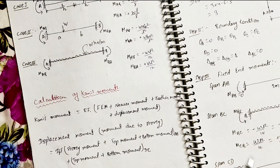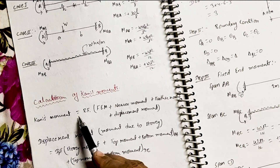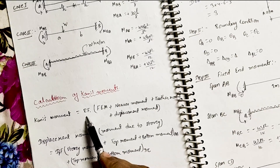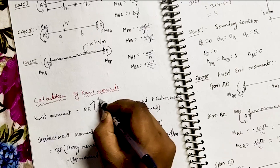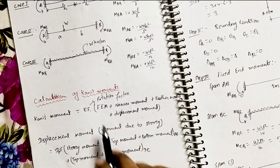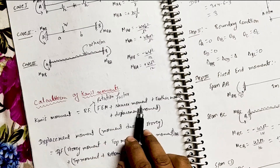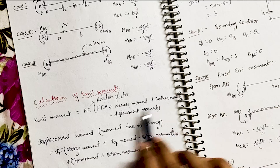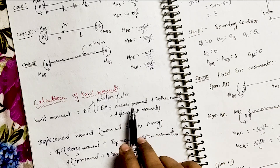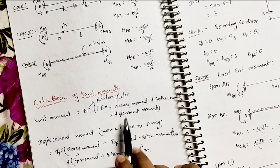Now, moving forward to calculate the Kani's moment. The formula is: Kani's Moment = RF × (FEM + near end moment + further end moment + displacement moment), where RF is the rotation factor, FEM is the fixed end moment, and the near end moment, further moment, and displacement moment will be demonstrated when we solve numerical examples.